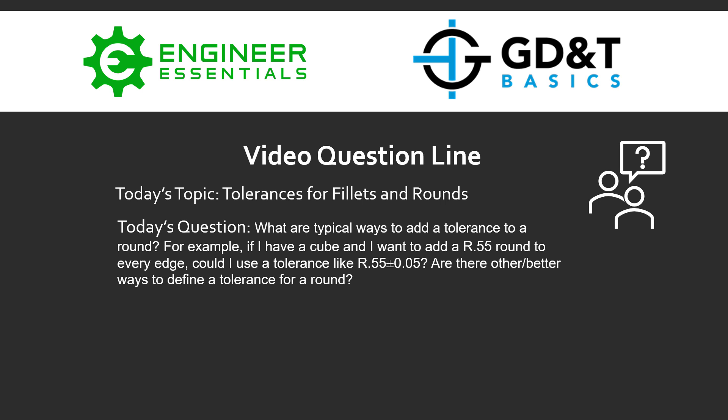Today's question is, what are typical ways to add a tolerance to a round? For example, if I have a cube and want to add a 0.55 round to every edge, could I use a tolerance like 0.55 plus or minus 0.05? Or are there other or better ways to define a tolerance for a round?